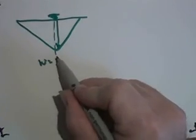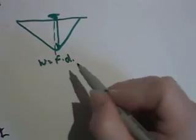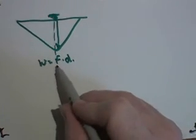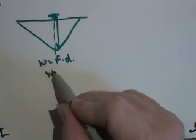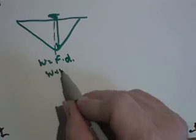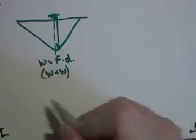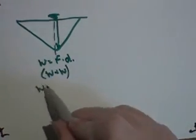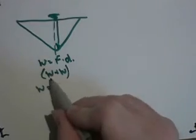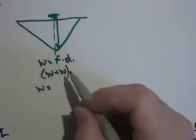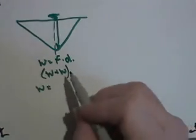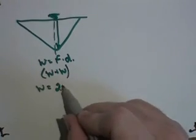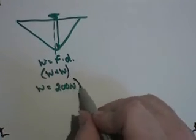The work is going to be equal to the force times distance. In this case, the force is the weight of the coyote plus the weight of the anvil. So let's make up some amount of work. We'll say the coyote is 100 newtons and the anvil is another 100 newtons. So he's got 200 newtons of force.